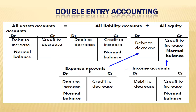The expense account has a similar treatment to the asset account. The expense account records our expenses. For example, if you pay an electricity bill, the electricity company receives that payment, so we debit their account. Any time there is an increase in expense, we debit the expense account, and any time there is a decrease in expense, we credit the expense account. Expense accounts will normally have a debit balance, just like asset accounts — an increase is debited and a decrease is credited.